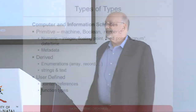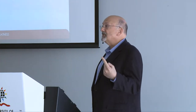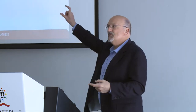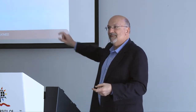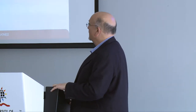Computer and information sciences think of data types differently. They use different types of types having to do with how data is processed within the software and hardware. These terms I'm using are not universally standard — if you had someone else talking to you about this, they might use a different set of labels or different categories. There are a lot of ways to describe this.